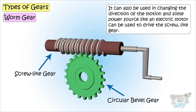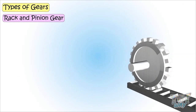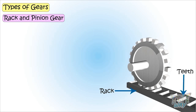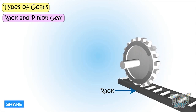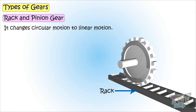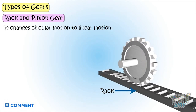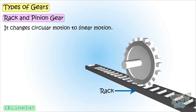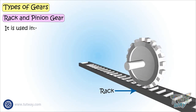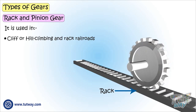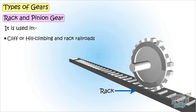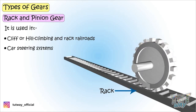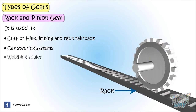Next we have rack and pinion gear. Here the rack is a straight bar with teeth on it and another gear meshes with it. It changes circular motion to linear motion. It is used in cliff and hill climbing and rack railroads, car steering systems, weighing scales, and many more types of machines.